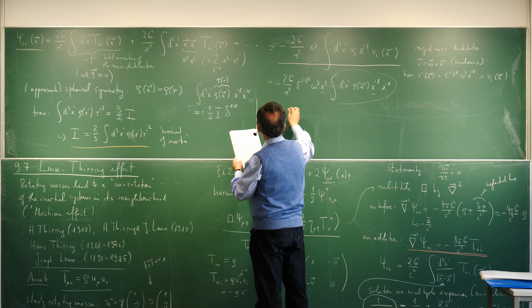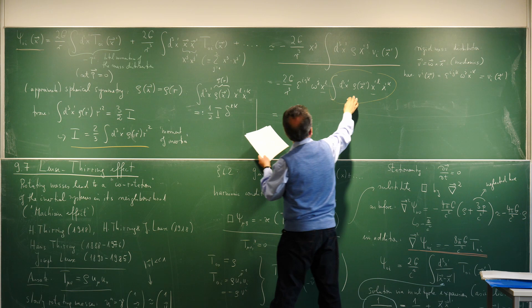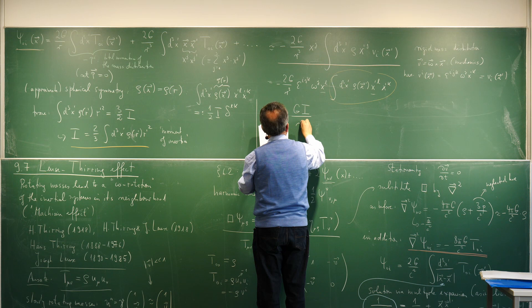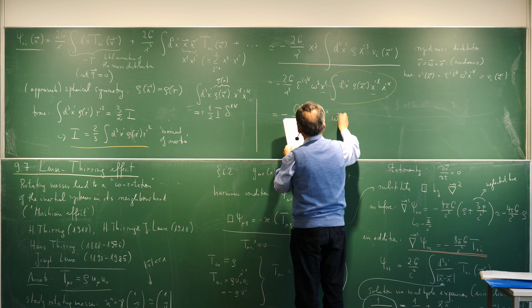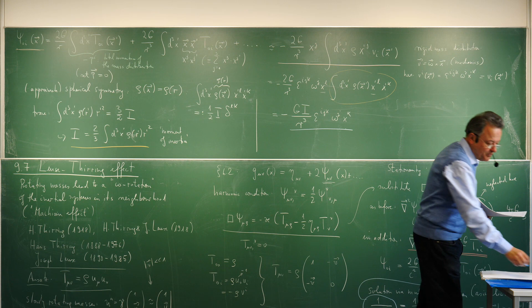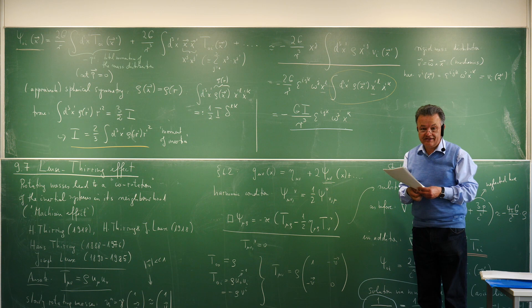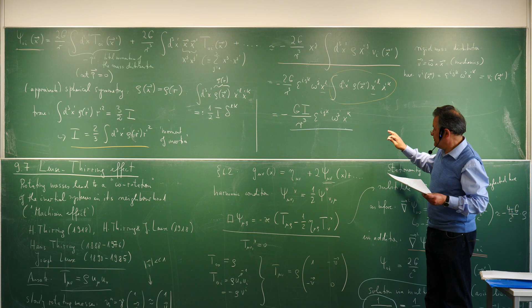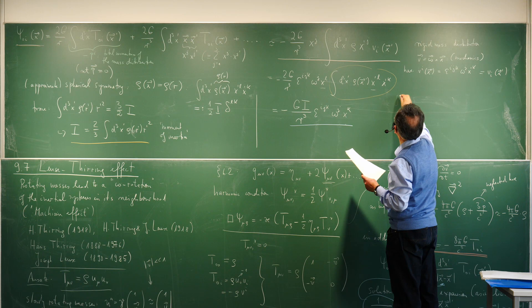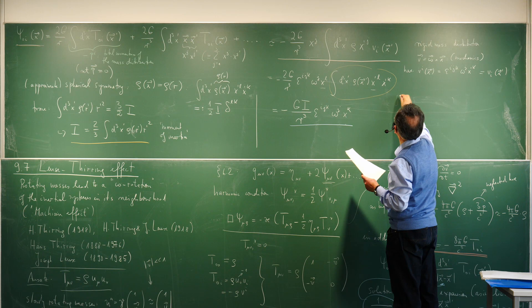Inserting this result, we find ψ_{0i}(x) = −(GI/r³) ε_{ijk} ω_j x_k. We are already far in the calculation: we have found this additional perturbation of the metric from the rotating body, giving non-diagonal terms. We now add 2ψ_{0i} to the Schwarzschild line element.